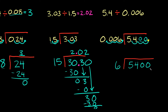Now let's divide 6 into 5,400. 6 doesn't go into 5, but it does go into 54 — exactly 9 times. 9 times 6 is 54, subtract and you have no remainder. Moving on to the zeros: 6 goes into 0 zero times, and 6 goes into this 0 zero times also. So 5,400 divided by 6 equals 900. Going back to the original problem, the answer is 900.